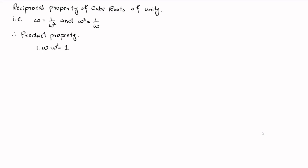Now, 1 multiplied with omega and omega square can be written as omega into omega square is equal to 1. Let's call this equation number 1.